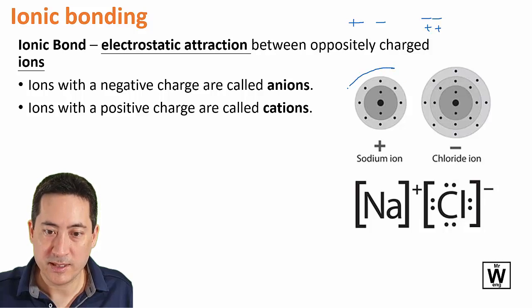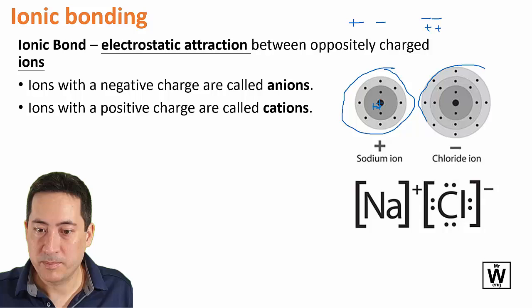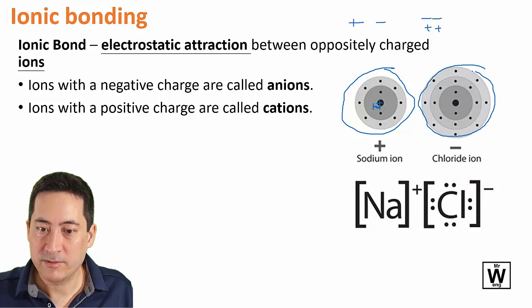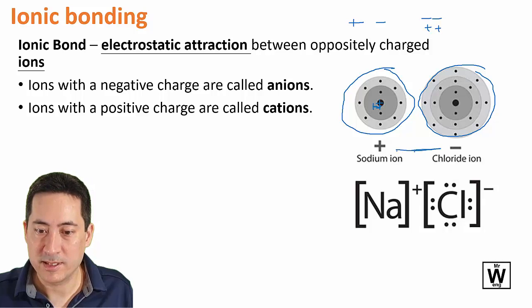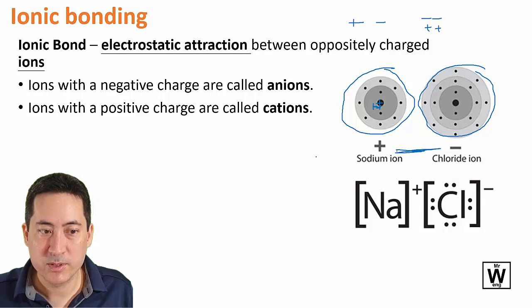So we have a positive cation. This guy has too many protons here for the number of electrons that it has, and this guy here has fewer protons than the number of electrons. So overall this particle has an overall negative charge, this particle has an overall positive charge, and they're attracted to each other. The definition is the electrostatic attraction between ions, between an anion and a cation.